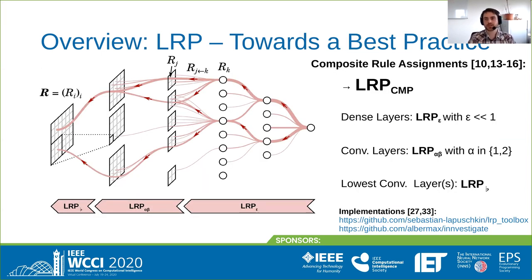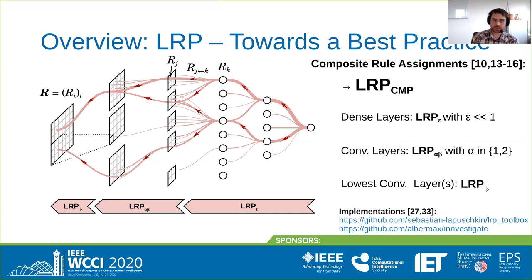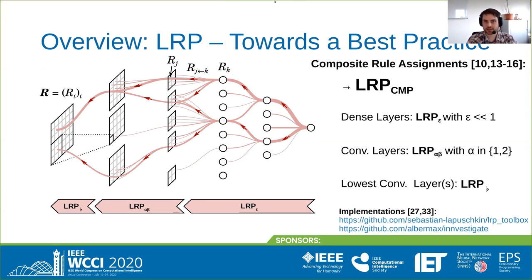The recently emerged best practice defines itself as a composite application of those rules, assigning specific rules to specific parts of the model. One common pattern is: LRP-Epsilon with a small epsilon factor applied to the dense stack at the top of the model; LRP-alpha-beta applied to large parts of the convolution stacks to combat gradient shattering; and the LRP flat rule applied to the input layers to gain invariance against shifts and translations in input space and to control the scale of the explanation.